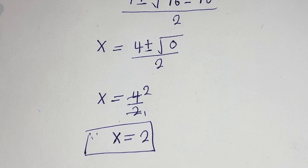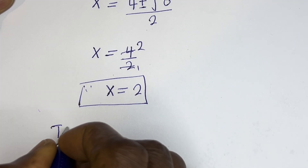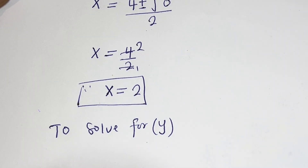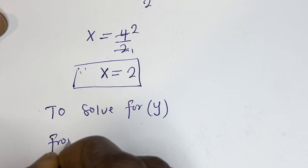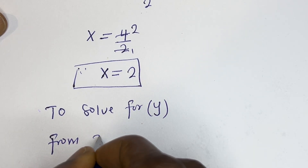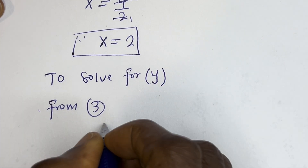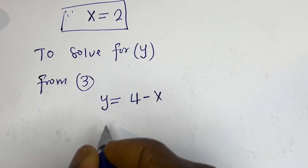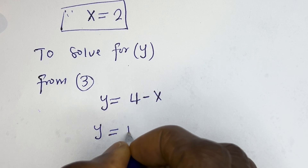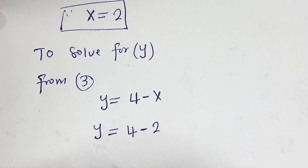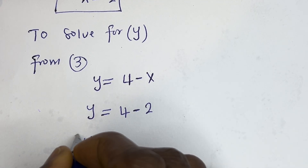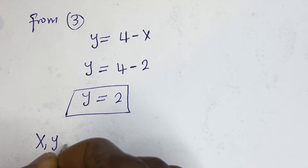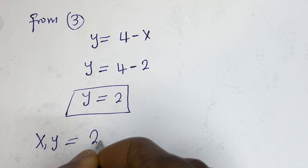Now let's solve for y. From equation 3, y is equal to 4 minus x. Substituting x equals 2: y is equal to 4 minus 2, therefore y is equal to 2. This is the value of y. Our final answers are x equals 2 and y equals 2.